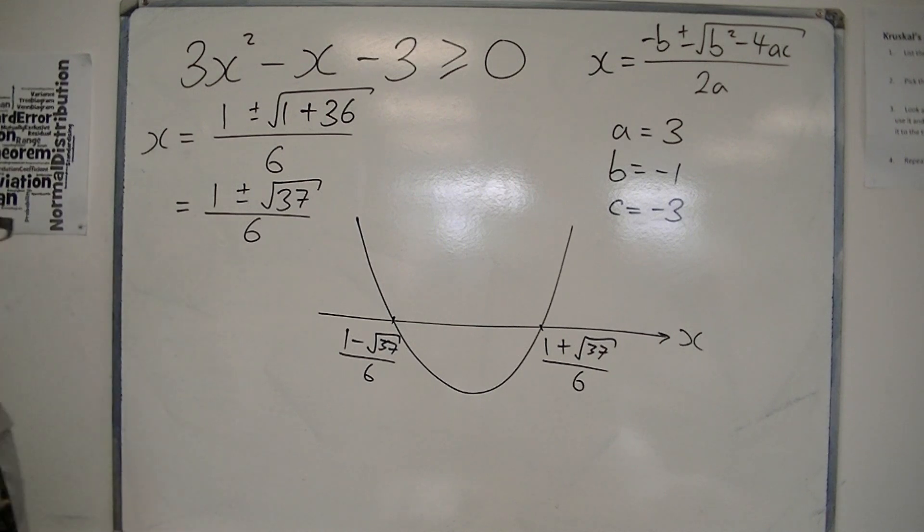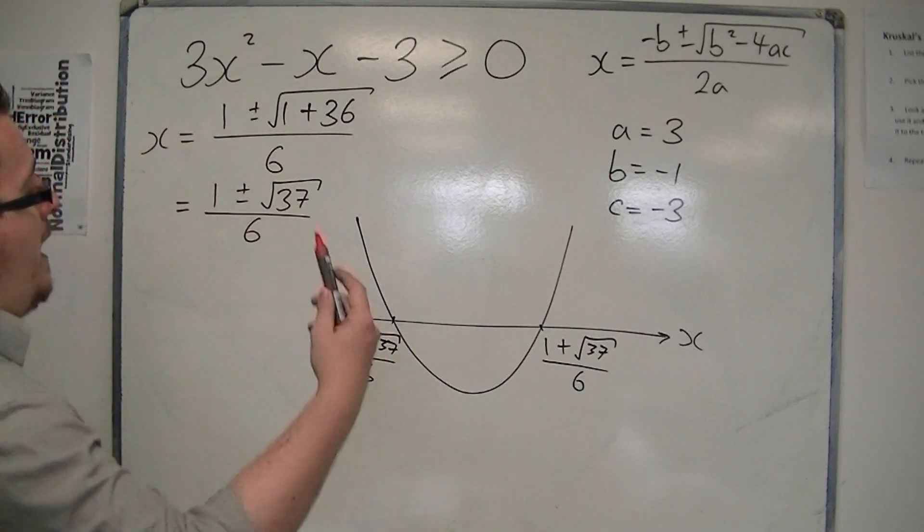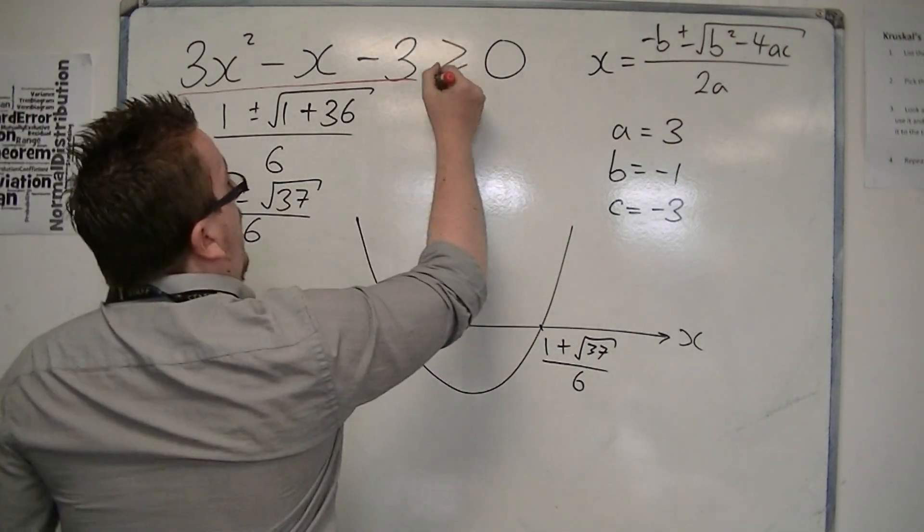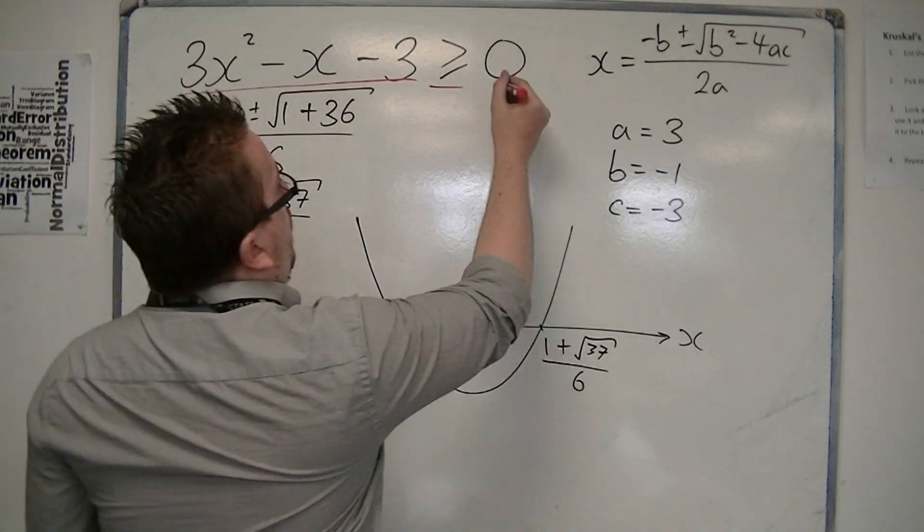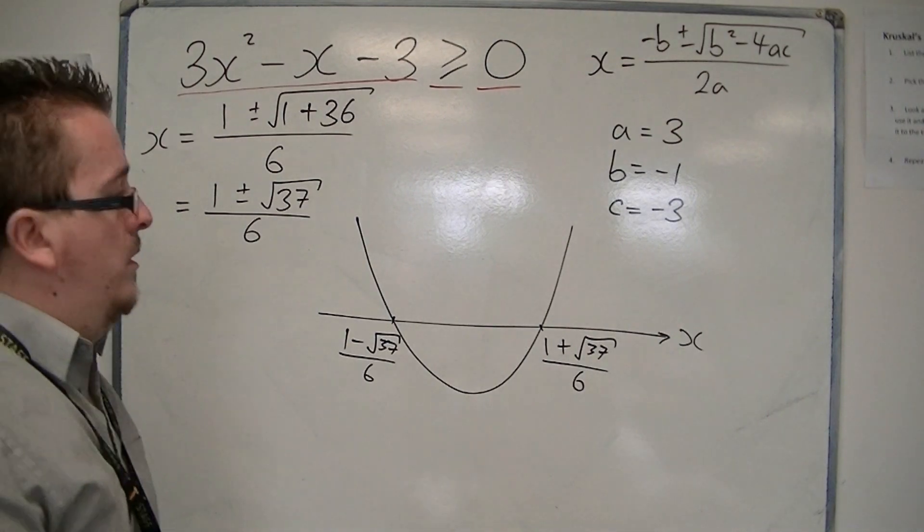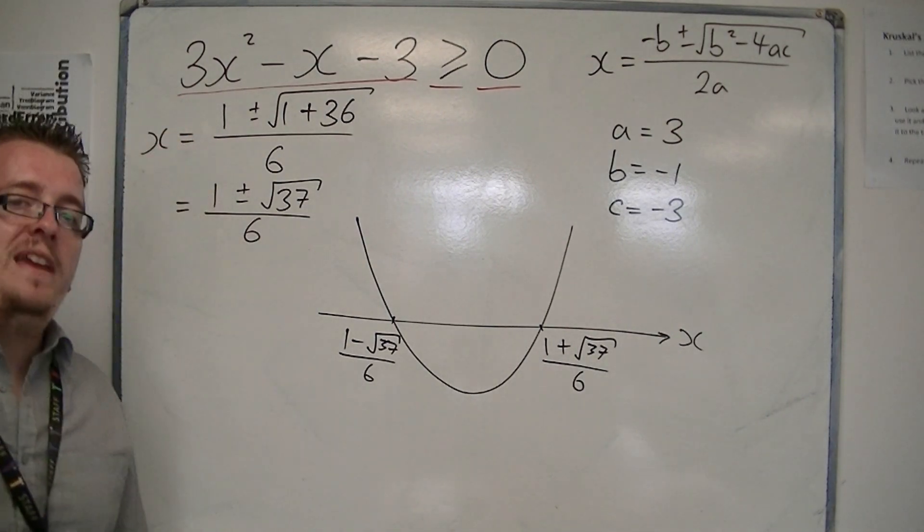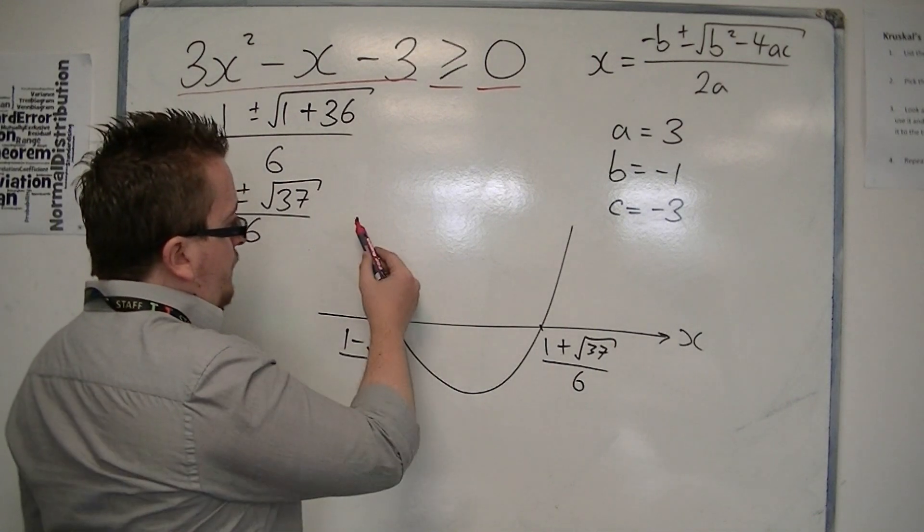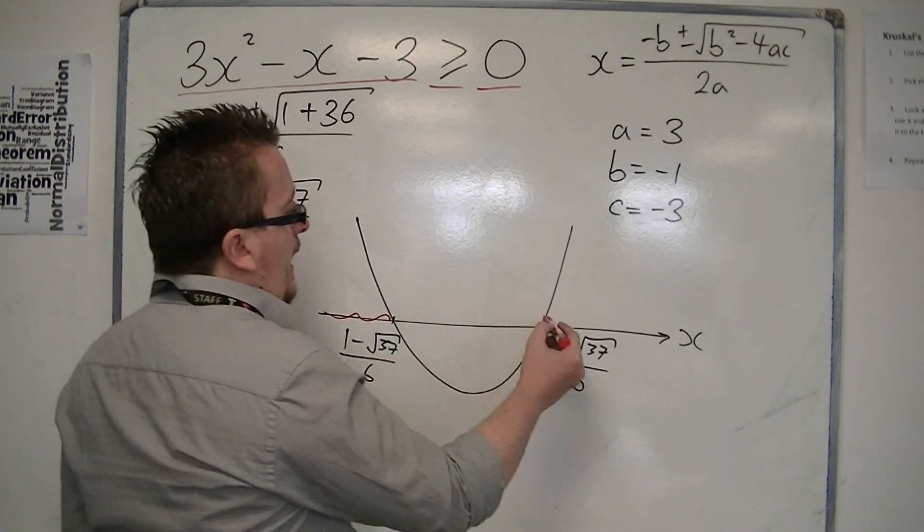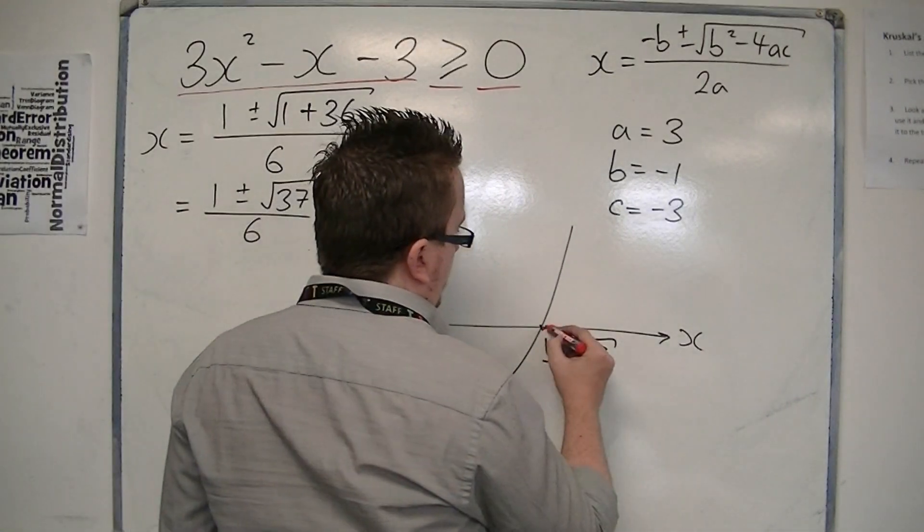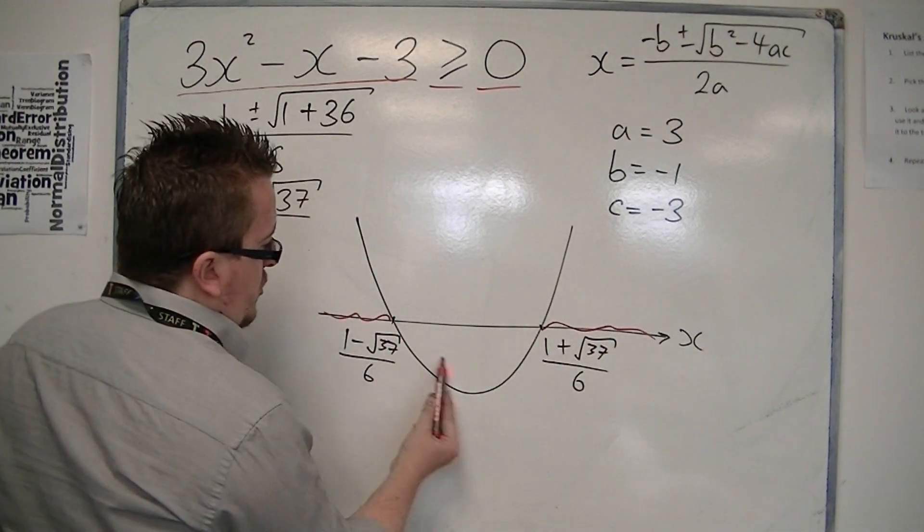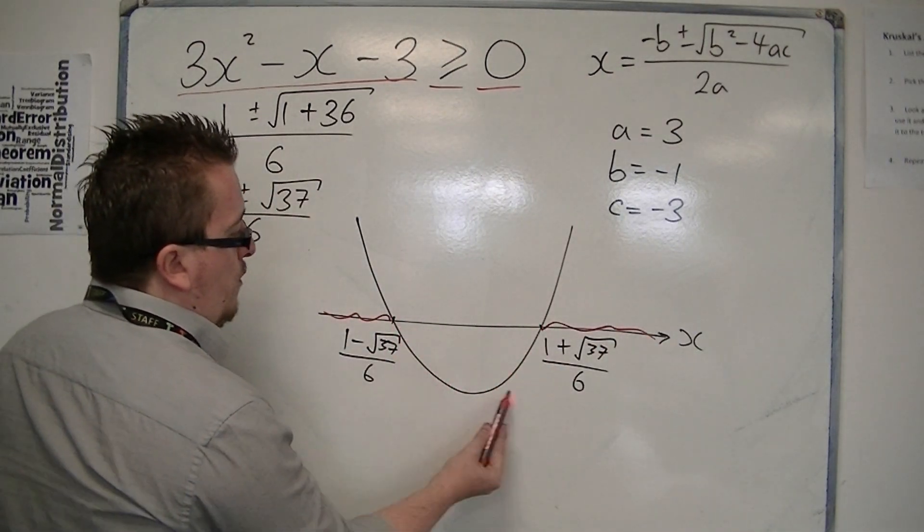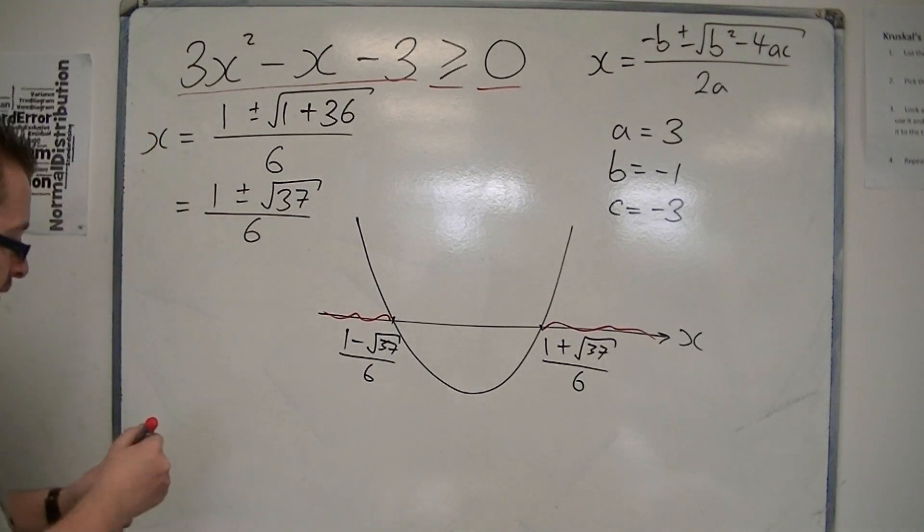Now, what it's asking for is where is this parabola above or equal to y equals 0? Where is it above the x-axis? And it's above it here, and it's above it here. Between these two points, it is below the x-axis. That's where the curve is, it's below the x-axis.